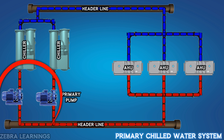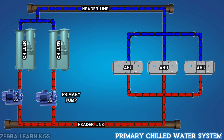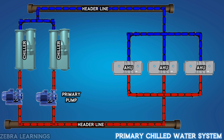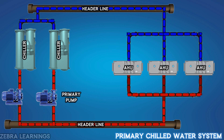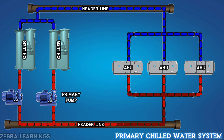Since the primary chilled water system uses only the primary pump for the entire process, the efficiency of the primary chilled water system is lower than that of the primary secondary chilled water system. Therefore, this system is used only in small areas.